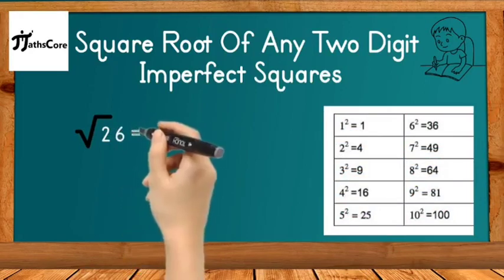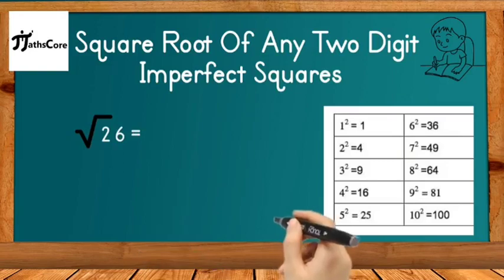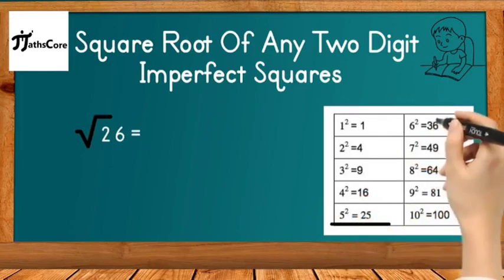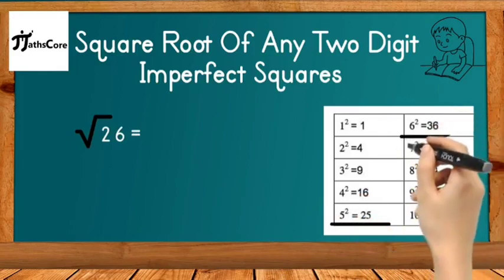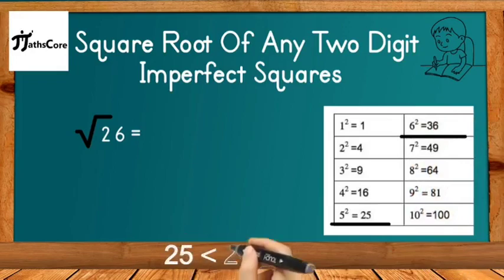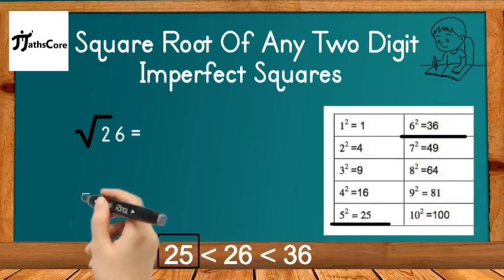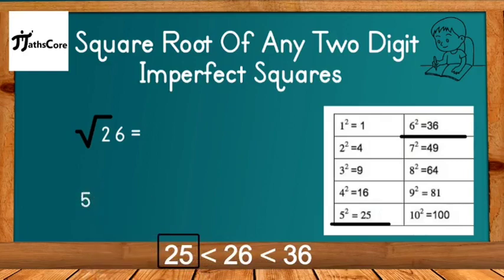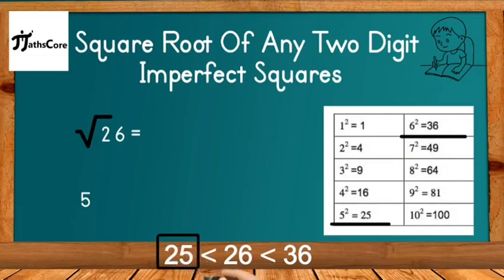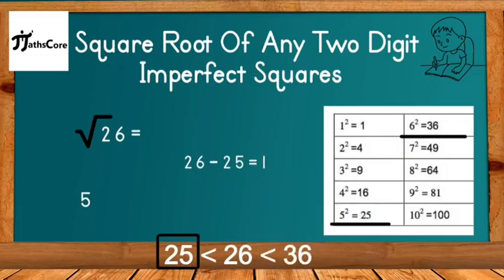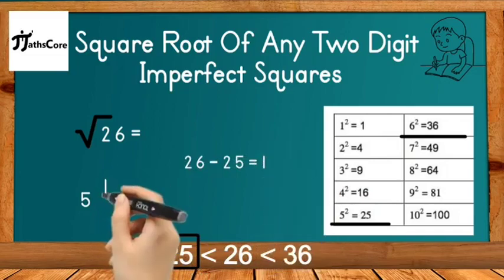To find the square root of 26, we follow some steps. First, find between which two perfect squares 26 lies. 5² = 25 and 6² = 36, so 26 lies between 25 and 36. Select the lesser perfect square, which is 25, and take its square root, which is 5. Write down 5. Then subtract 25 from 26: 26 − 25 = 1.